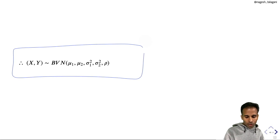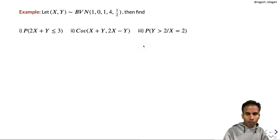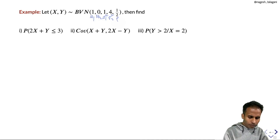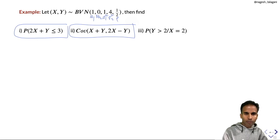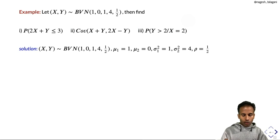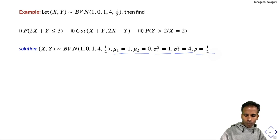Example: Let (x,y) follow the bivariate normal distribution with μ1=1, μ2=0, σ1²=1, σ2²=4, ρ=1/2. So σ1=1, σ2=2. Find: (1) P(2x+y ≤ 3), (2) Cov(x+y, 2x−y), (3) P(y>2 | x=2). Let W=2x+y. By the theorem with A=2, B=1, W ~ Normal with mean 2μ1+μ2=2 and variance 4·1+1·4+2·2·1·(1/2)·1·2=4+4+4=12.